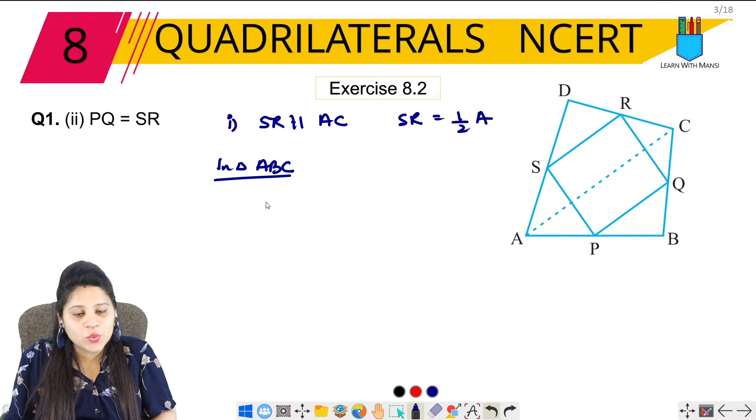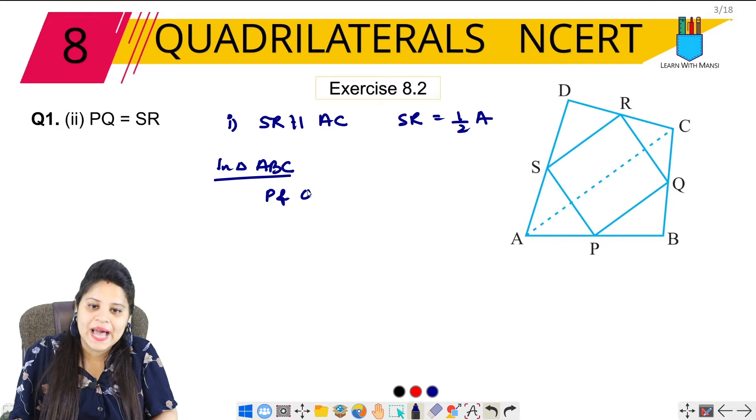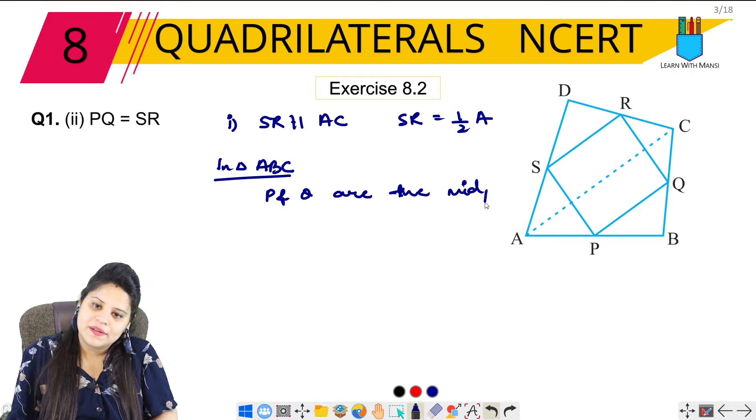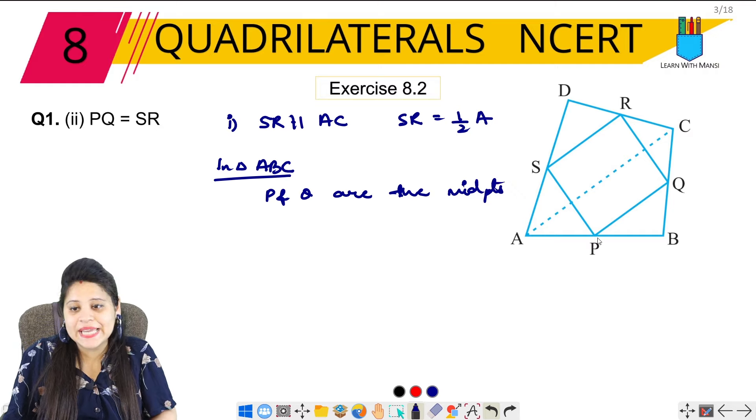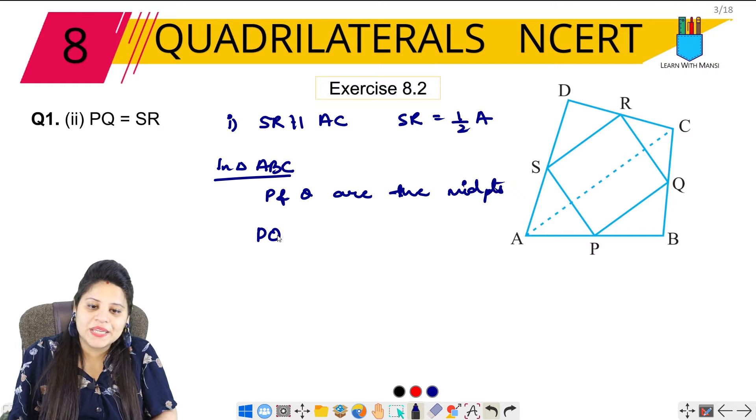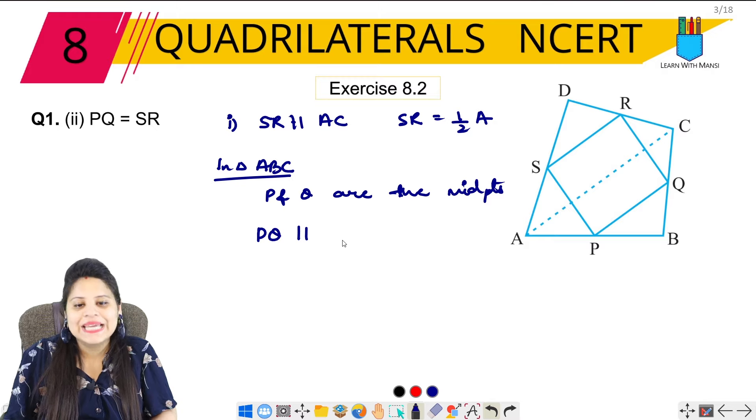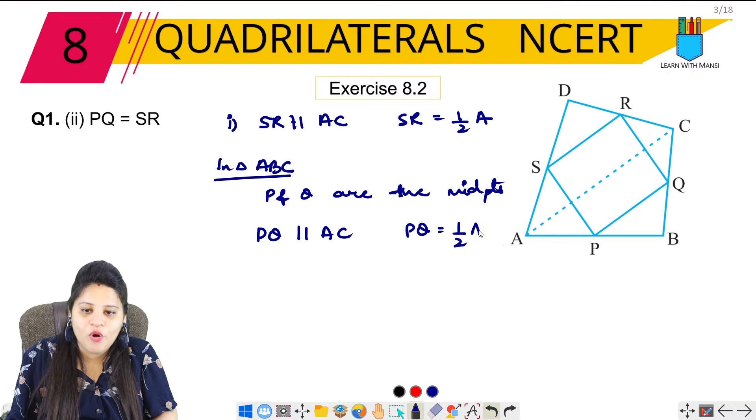P and Q are the midpoints. So PQ will be parallel to AC, and PQ will be equal to half of AC.